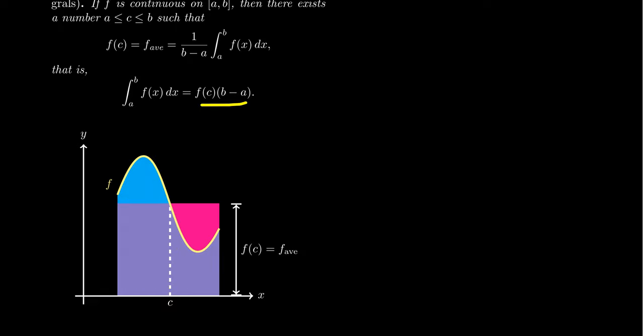The right-hand side is f of c times b minus a. Because we have a product of two numbers equal to an area, this makes me think it's likewise the area of a rectangle — a rectangle whose width is b minus a and whose height is f of c. If we take the guaranteed point f of c, it is the point on the graph which has the same value as the average value of the function.